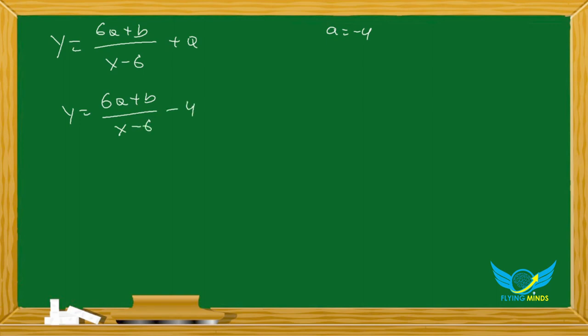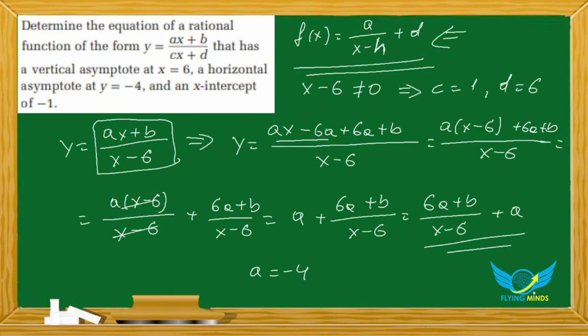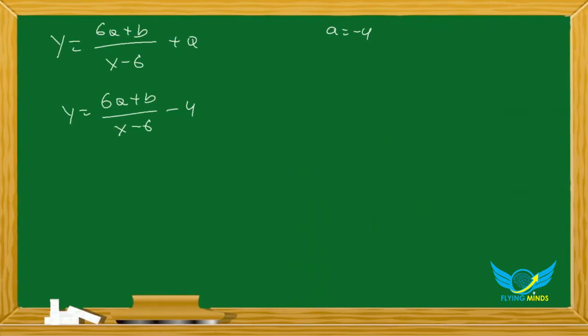We're going to use the fact that the x-intercept equals negative 1, which means the point negative 1, 0. We're going to use this fact and substitute these values for x and y.